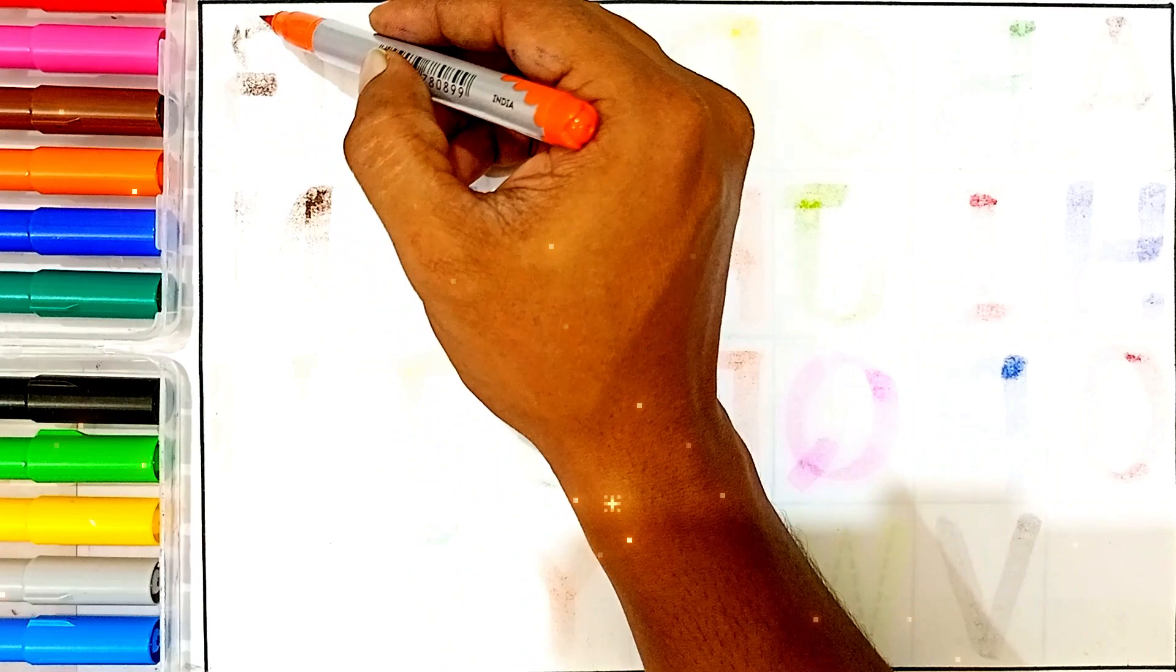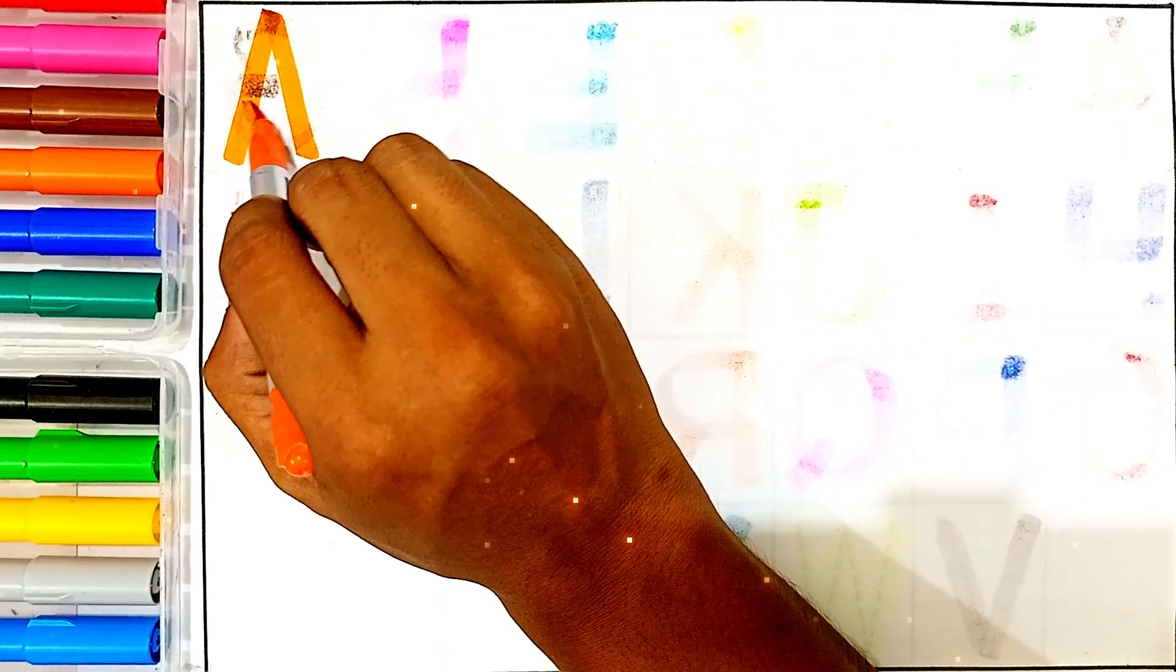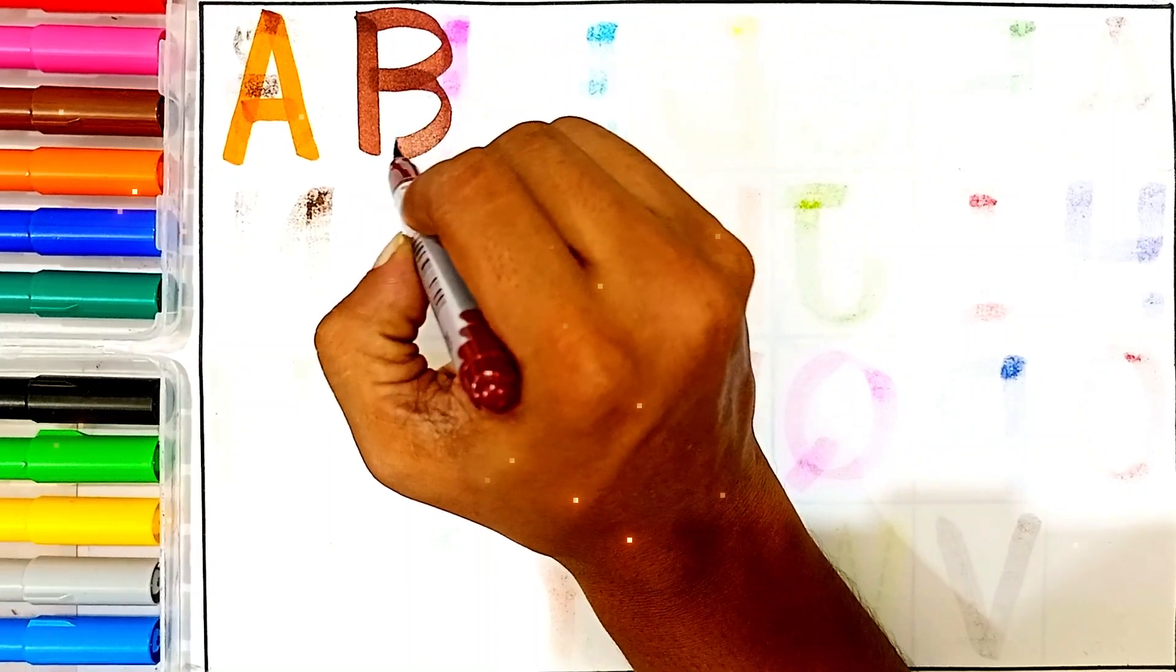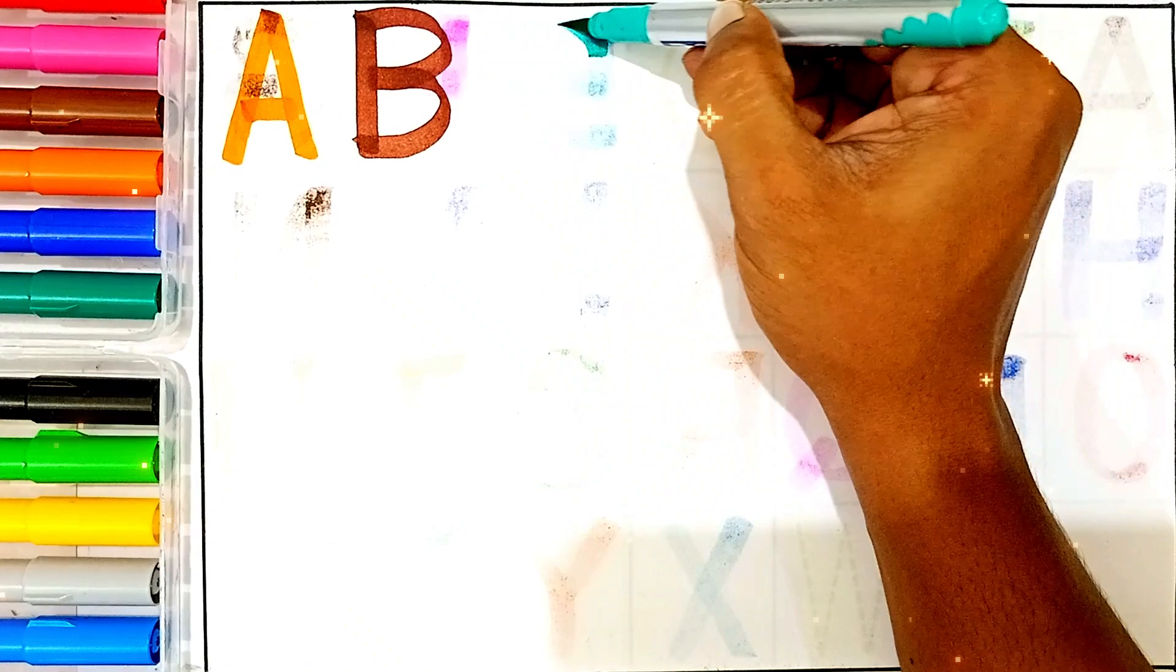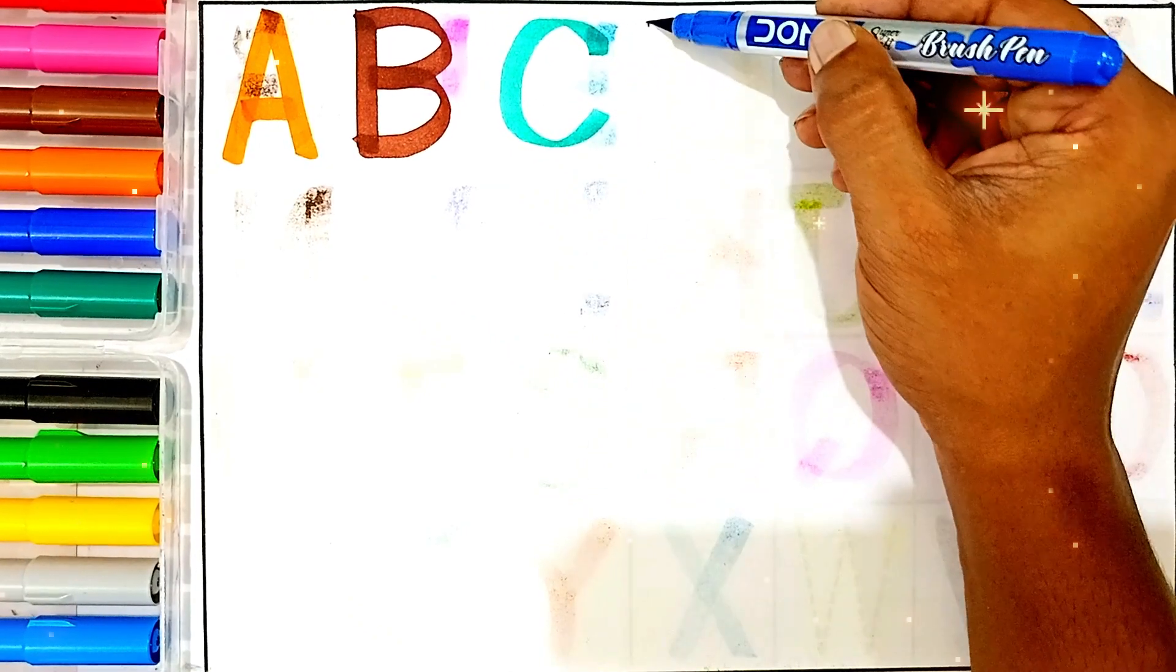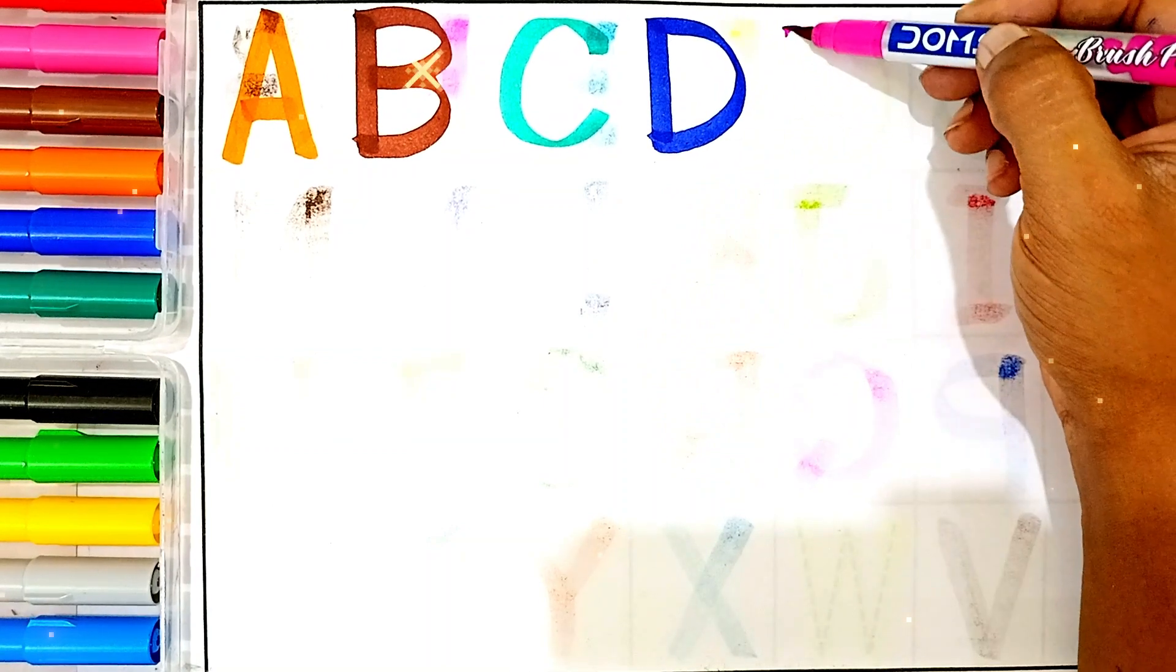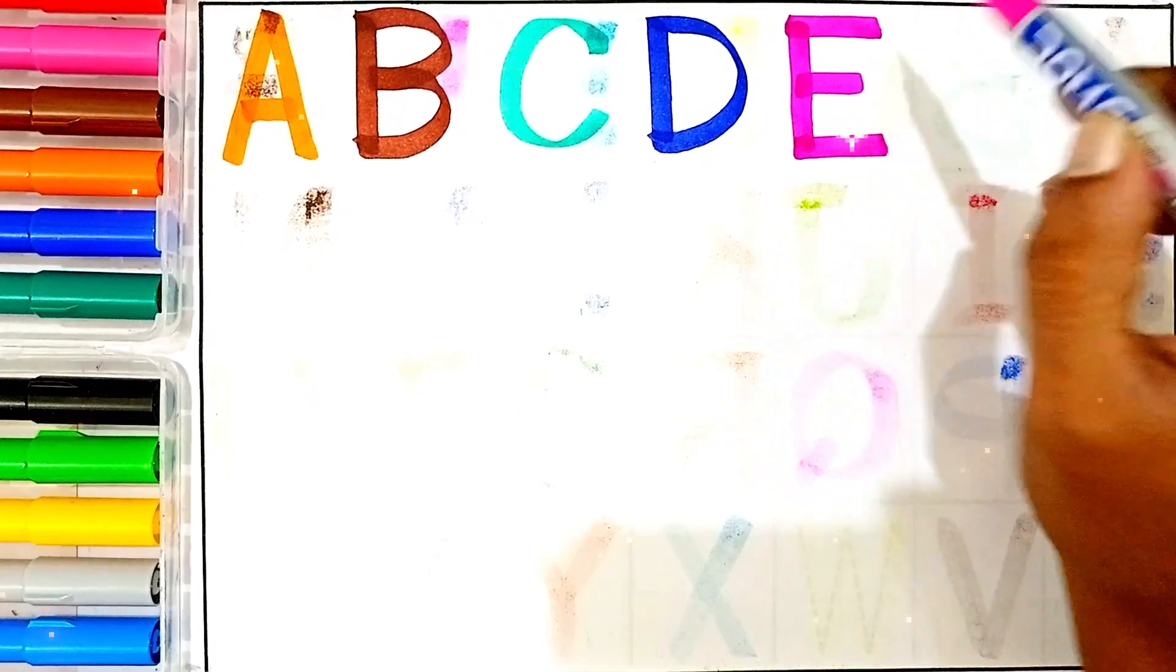A, orange color, A for ant. B, brown color, B for ball. C, green color, C for cat. D, blue color, D for dog. E, pink color, E for elephant.